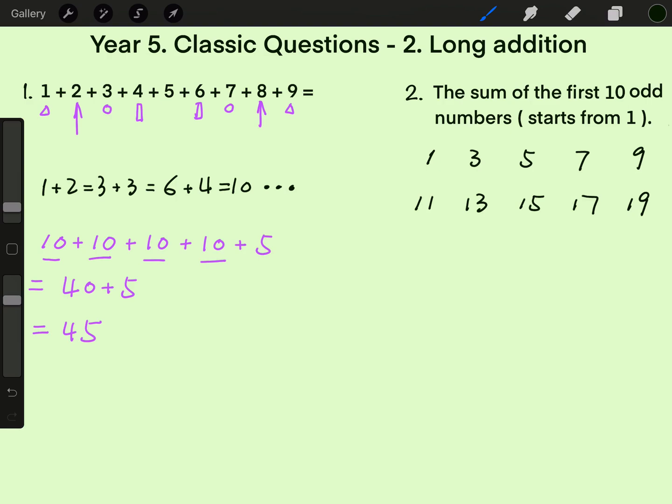So let's try to get the sum of the first 5 odd numbers. Friends of 10, friends of 10, friends of 10. So it equals 10 plus 10 and then plus 5. Finally, 25.